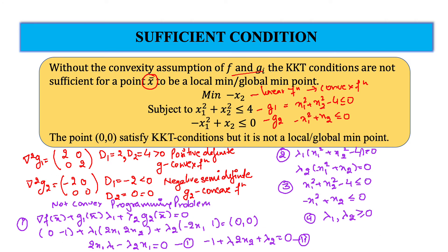Now the point (0, 0) satisfies the KKT conditions. If you put X1 equals X2 equals 0 into the second condition, you get lambda2 equals 1. Putting values into the other conditions gives lambda1 equals 0. Checking feasibility: 0 plus 0 minus 4 is less than 0, and 0 plus 0 equals 0, which is satisfied. Both lambda1 equals 0 and lambda2 equals 1 are greater than or equal to 0. So all four KKT conditions are satisfied at (0, 0).